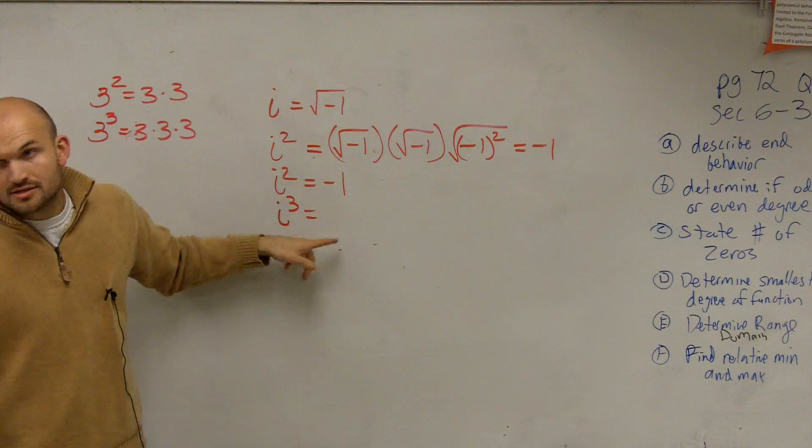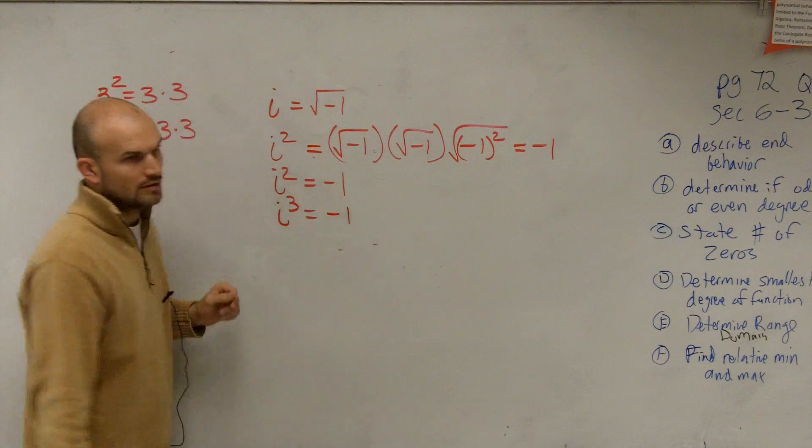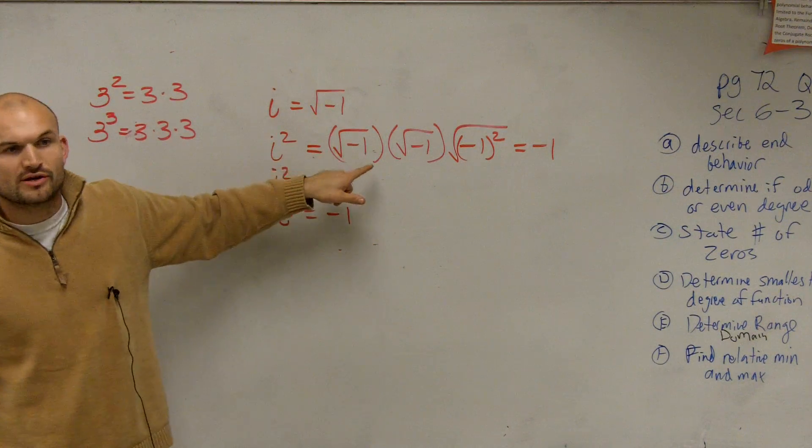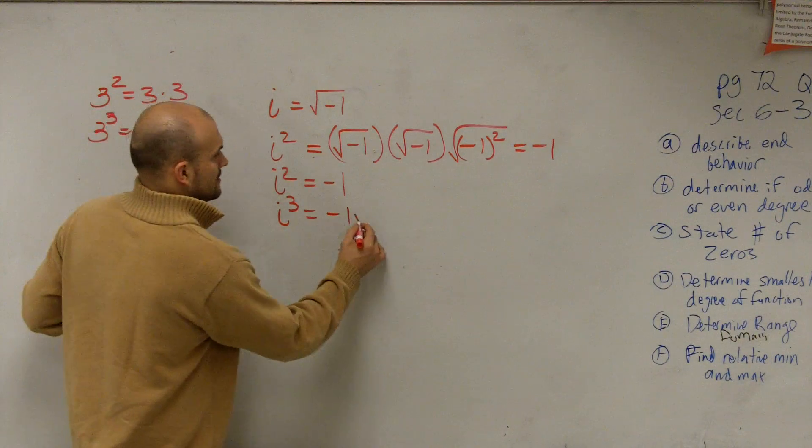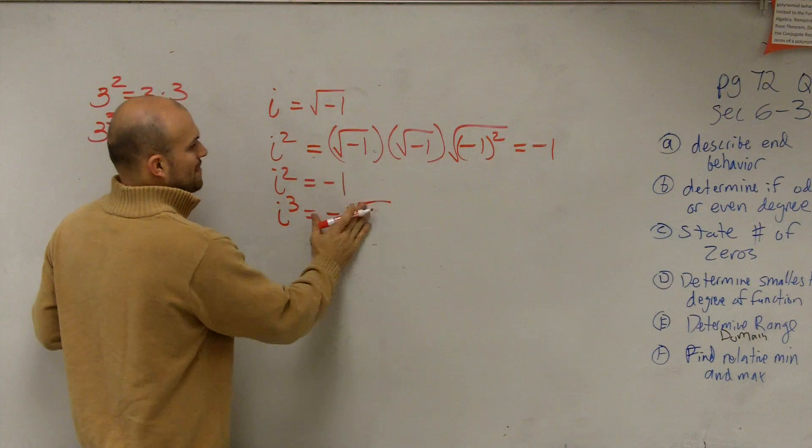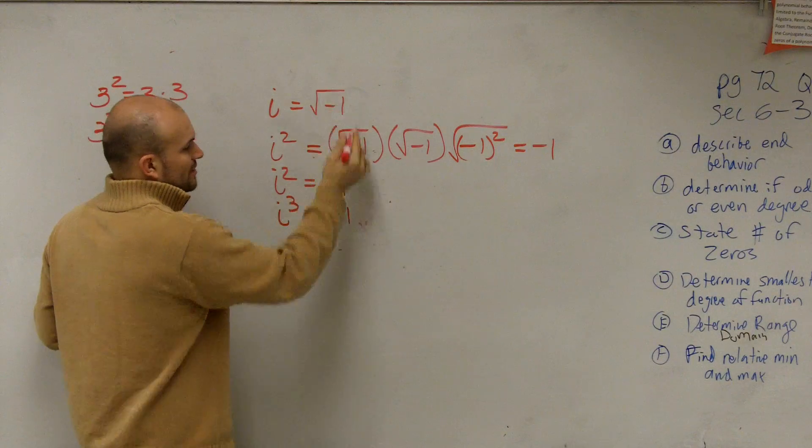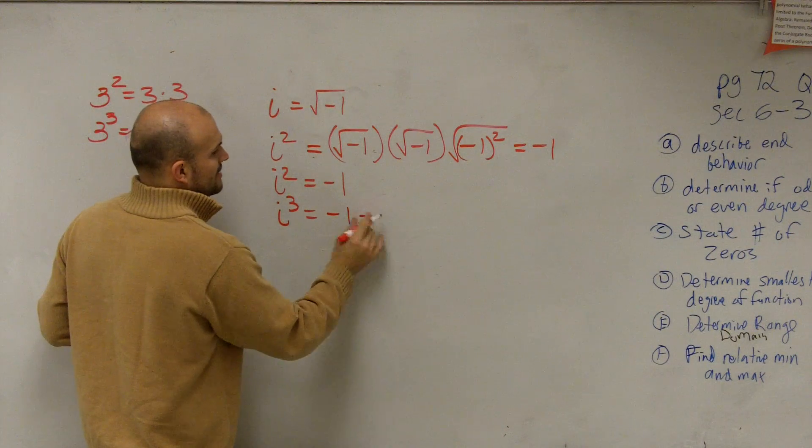We already know what i squared is, which is negative 1, right? And let's just multiply it by the square root of i one more time. Or let's just multiply it by i again. Why write it as square root of negative 1? Let's just multiply it by i.